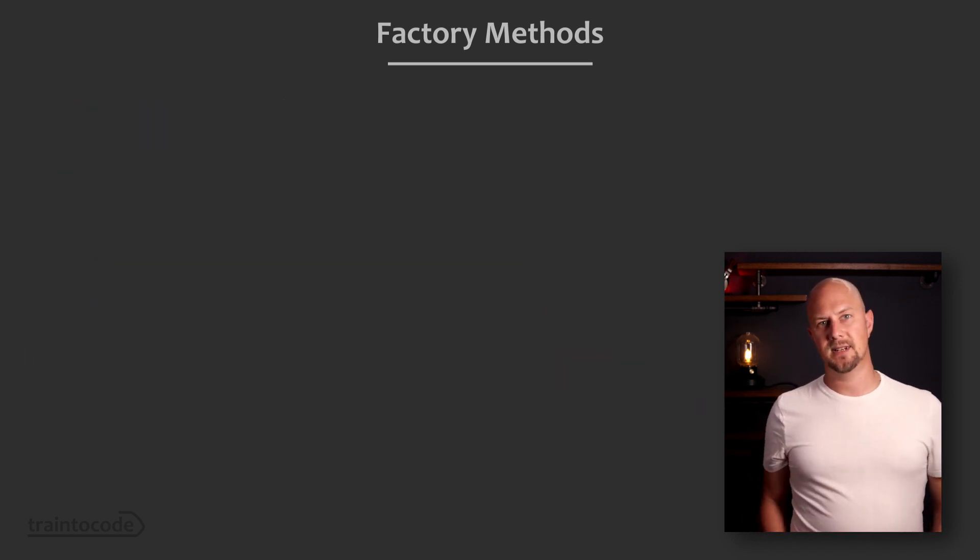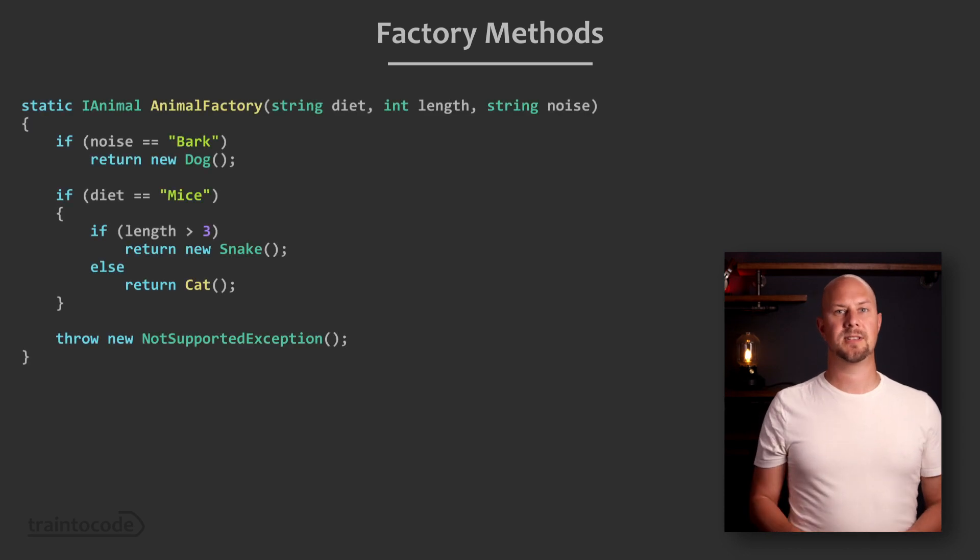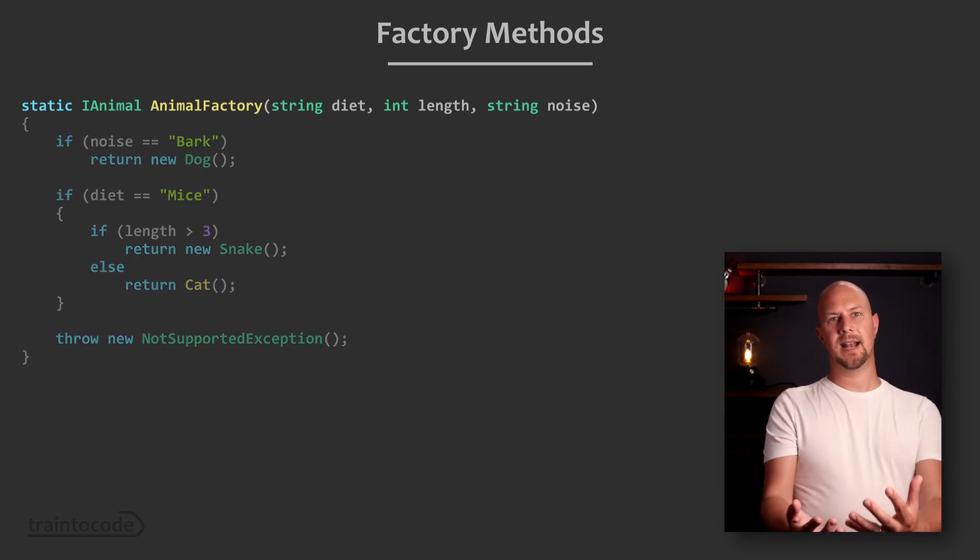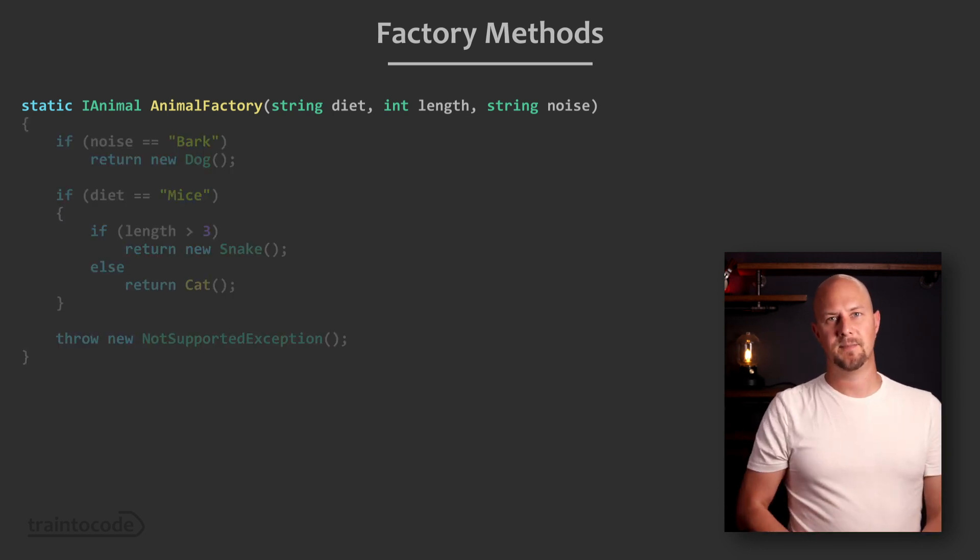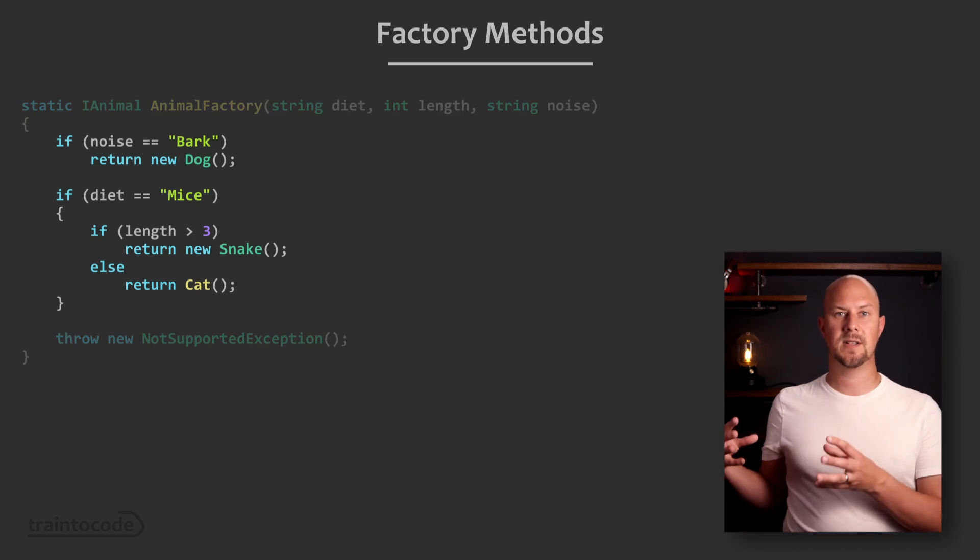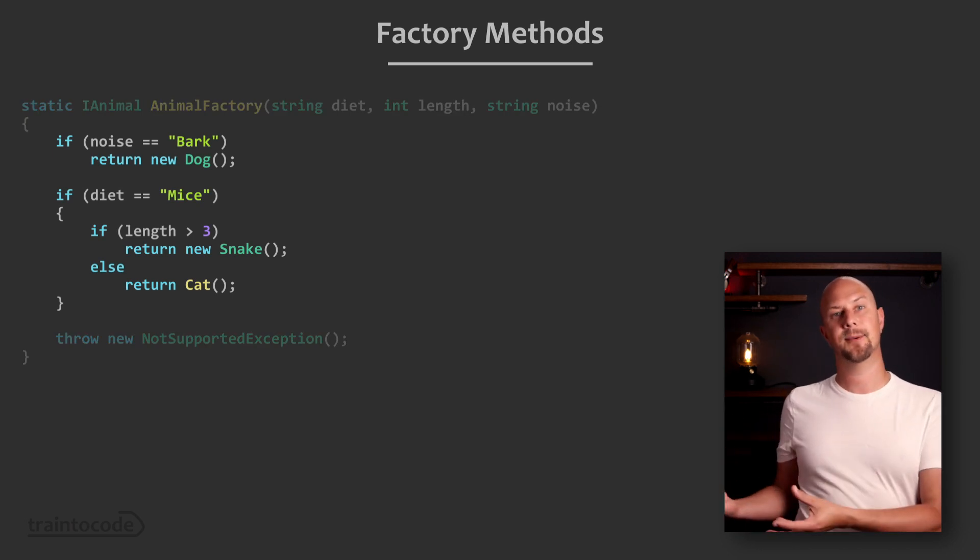To implement the factory pattern we create a function somewhere maybe just a static function and we have a return type of an object of iAnimal and then we put the logic in here. Now we can call our factory method and we can say give me an animal with these three attributes and it executes this logic and returns some kind of class that implements iAnimal.